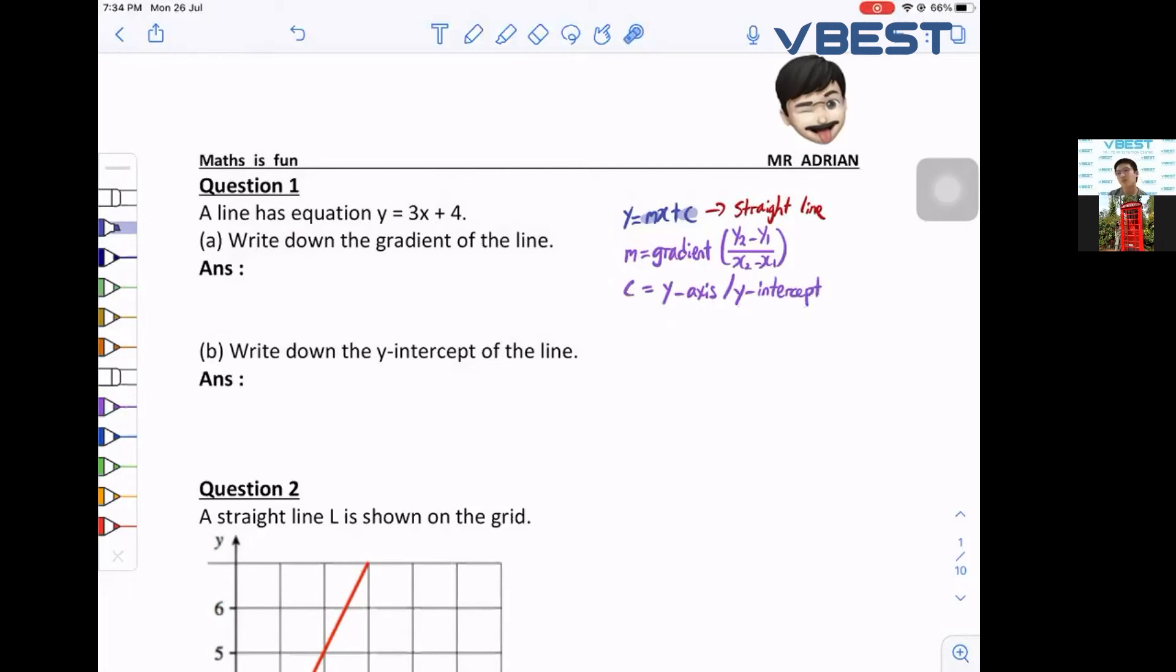Maybe you get confused now why I got two y here. The y and the x is actually for your coordinate. The two unknowns here, y and x, is actually for your coordinate. The c is your y-axis, so they are not the same actually. Remember, if you want to form an equation for your straight line, you just find out the gradient and the c.